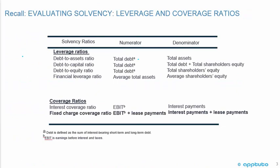Let's look in more detail at the leverage and coverage ratios, with their numerators and denominators — it's always important to get those right. For the debt-to-assets ratio, the numerator is total debt and the denominator is total assets. Debt is defined as the sum of interest-bearing short-term and long-term debt.